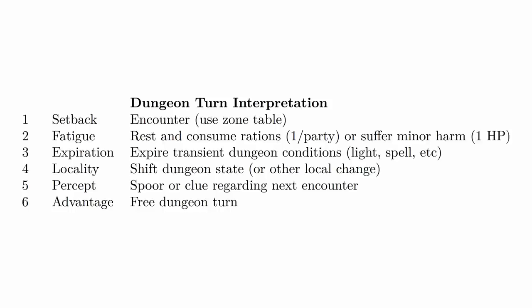These generic results are going to be interpreted in particular ways depending on the mode of play you're currently in. For example, if you were in a dungeon having a dungeon crawl, the results would look like this: number one, the setback would now be an encounter; number two, fatigue would mean you have to rest and consume rations, one per party, or suffer minor harm; number three, expiration would be to expire transient dungeon conditions like light or spell.